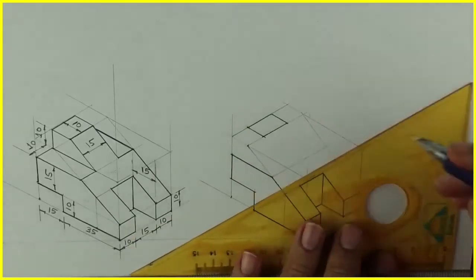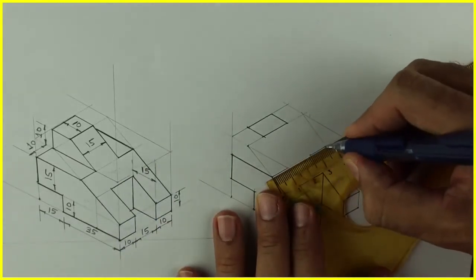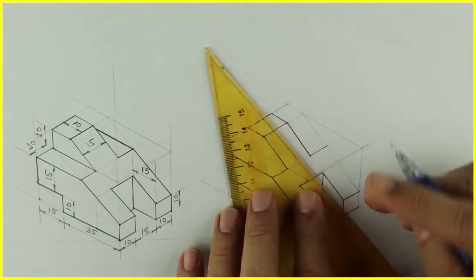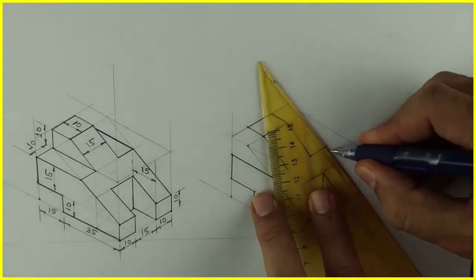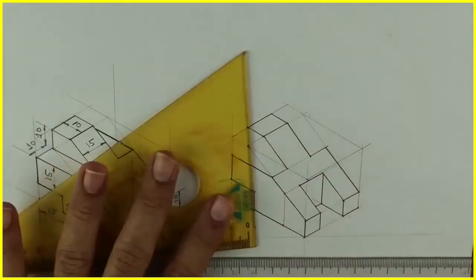Now after this I'll extend this line, again 10, 15, 10. So now inclined portion is done. This is very useful in ICSE technical drawing as well as engineering drawing.